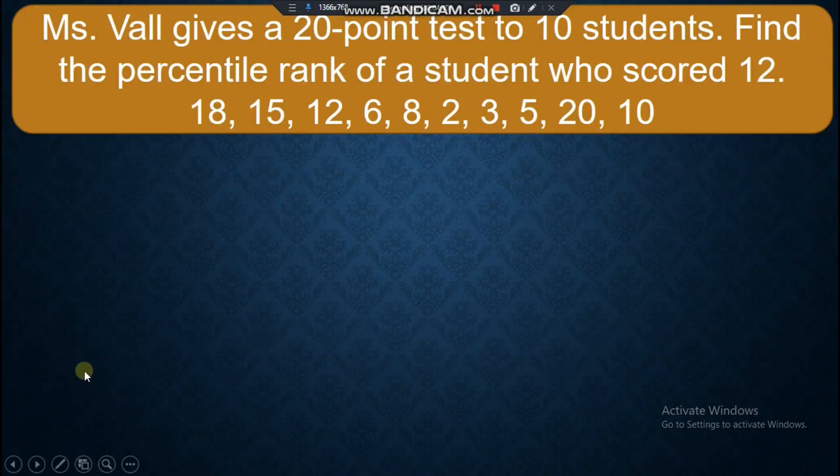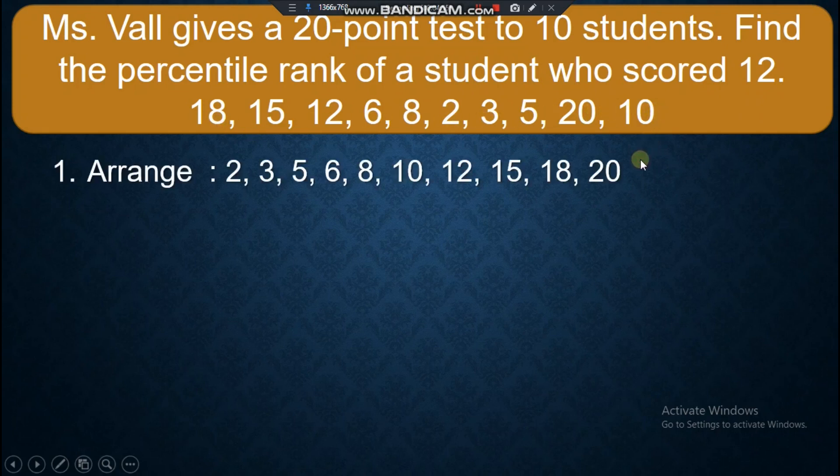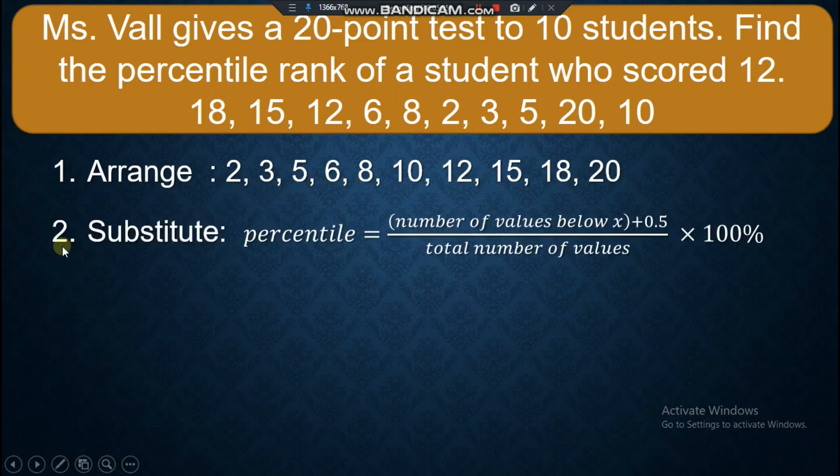Let's have this example problem. Ms. Val gives a 20-point test to 10 students. Find the percentile rank of a student who scored 12. The first step is you have to arrange the data into ascending order, meaning lowest data to the highest data. Next, you substitute it to the formula. The number of values below x: our x is 12. How many values or numbers that are below 12? You have 1, 2, 3, 4, 5, 6. So that is the reason why it is 6 here.